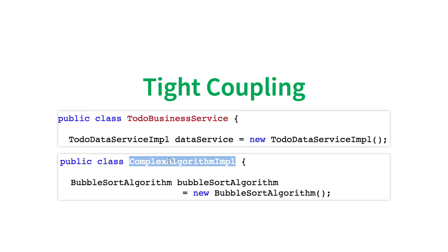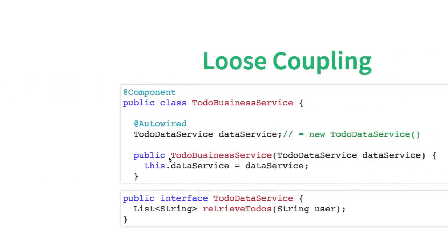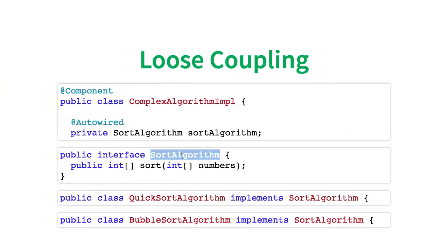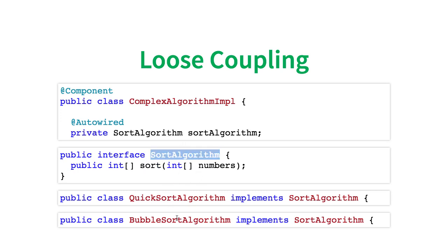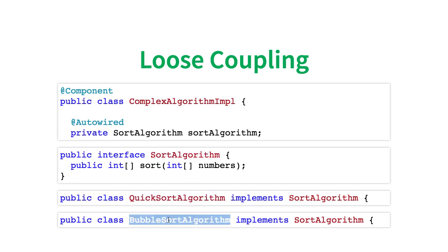How can we decouple it? We want to be able to use ComplexAlgorithmImpl with bubble sort, quick sort, or whatever sorting algorithm we choose. What we typically do is create an interface. We create an interface called SortAlgorithm with one method: sort. There can be multiple implementations — QuickSortAlgorithm, BubbleSortAlgorithm, and other sort algorithms.